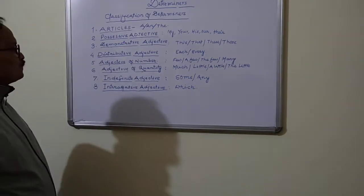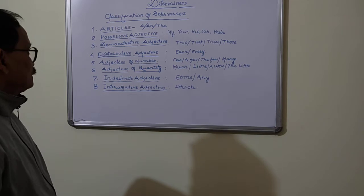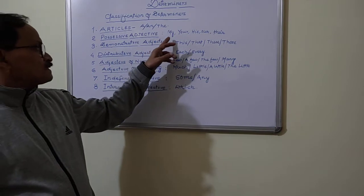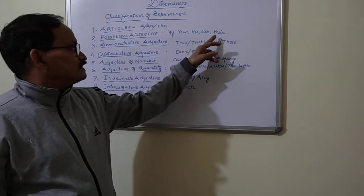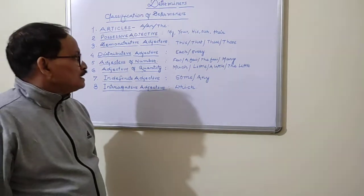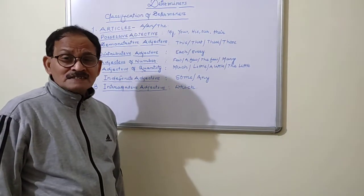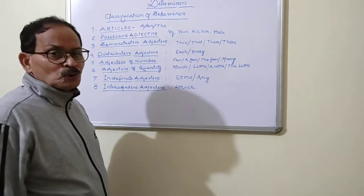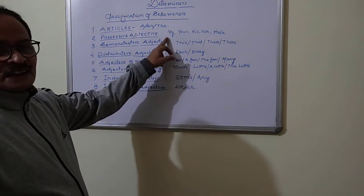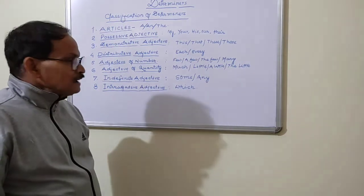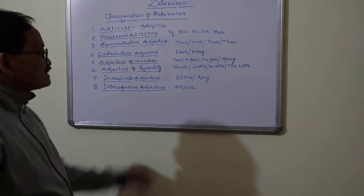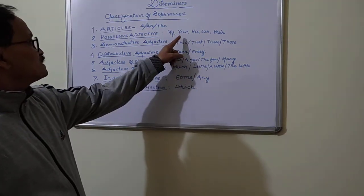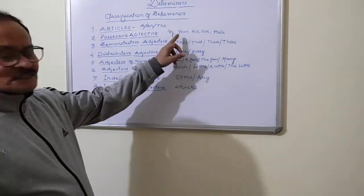The second classification is possessive adjective. Examples of possessive adjectives are: my, your, his, our. For example, 'he is my brother' — 'brother' is the noun and 'my' is the possessive adjective which has been placed before 'brother' and it acts as a Determiner. Similarly, another example: 'she is your sister' — 'sister' is the noun and 'your' is the possessive adjective and ultimately it is a Determiner.